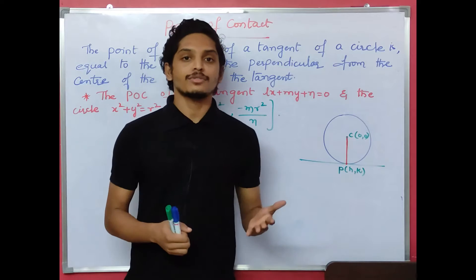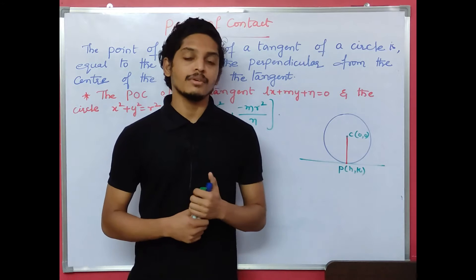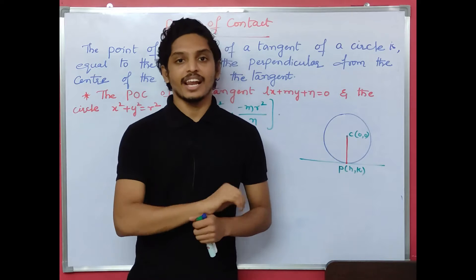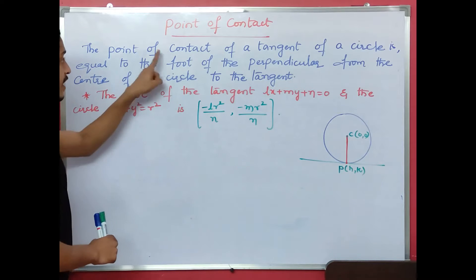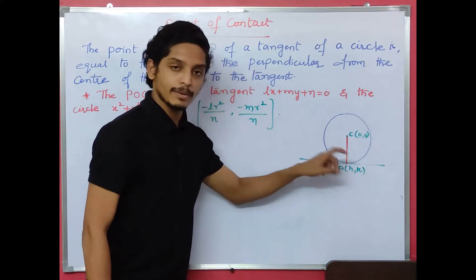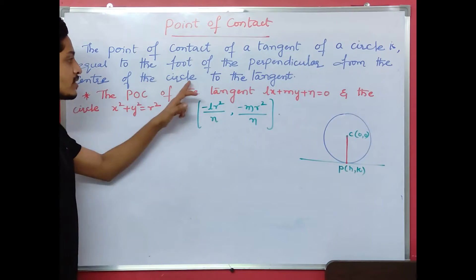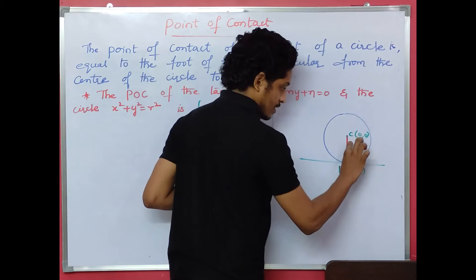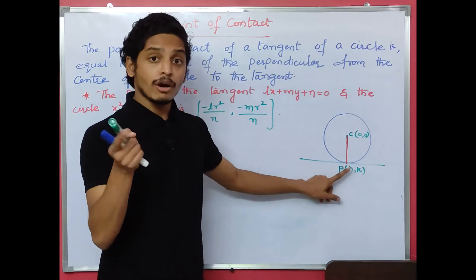So far, we have done tangents, we have touched the circle equations — the conditions. Now, we will talk about the point of contact of a tangent of a circle. The point of contact is equal to the foot of the perpendicular from the center of the circle to the tangent.